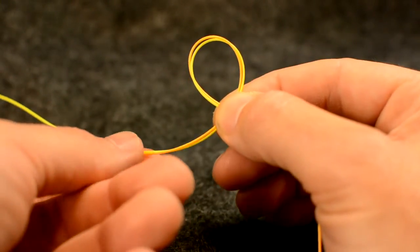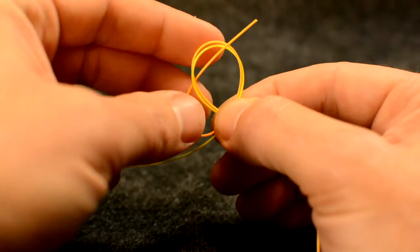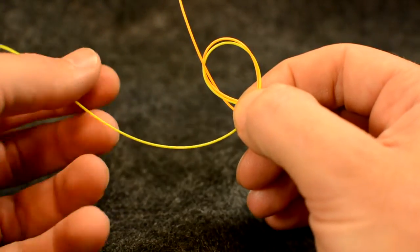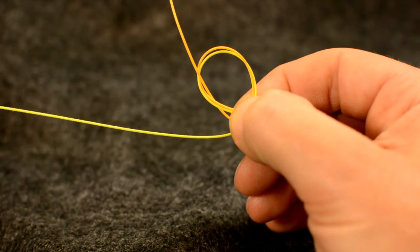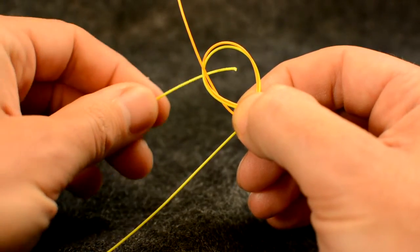Grab the tag end of your leader and pass it through the back side of the loop. Then grab the terminal end of your tippet section and pass it through the loop in the same direction.